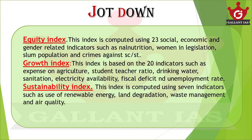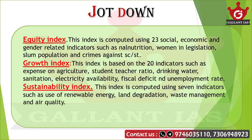The next index is the Growth Index, which is based on 20 indicators such as expenditure on agriculture, student-teacher ratio, drinking water, sanitation, electricity availability, fiscal deficit, and unemployment rate. In this category, Kerala, Karnataka, Tamil Nadu, Andhra Pradesh, and Punjab performed well, while Rajasthan, Jharkhand, Odisha, Bihar, and Uttar Pradesh performed very badly.